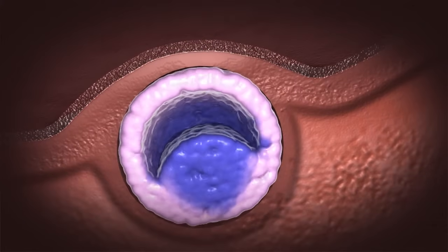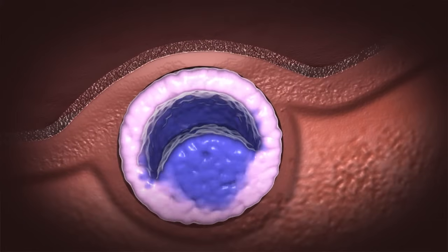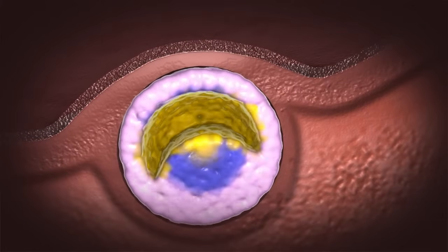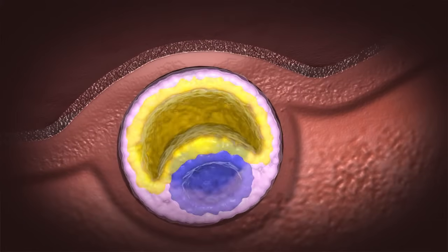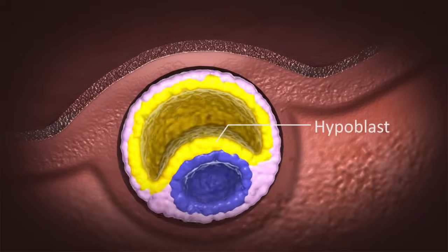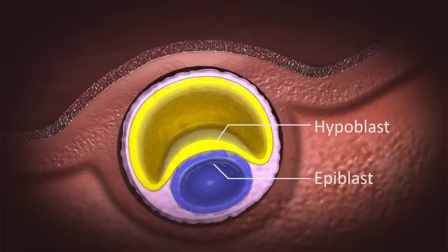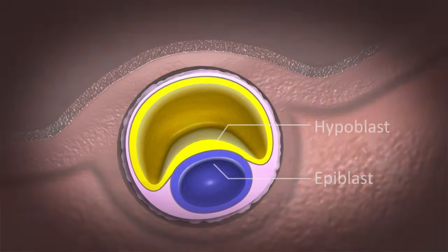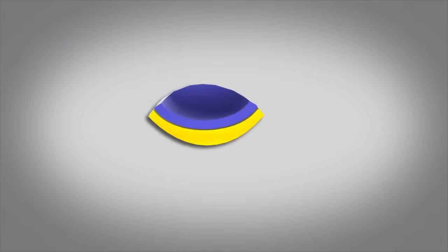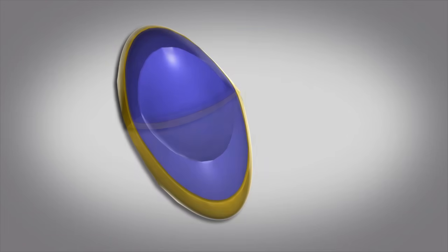During the second week of development, the inside of the blastocyst, known as the embryoblast, becomes two layers: the hypoblast and the epiblast layers. Together, these layers form an oval-shaped disc-like structure.